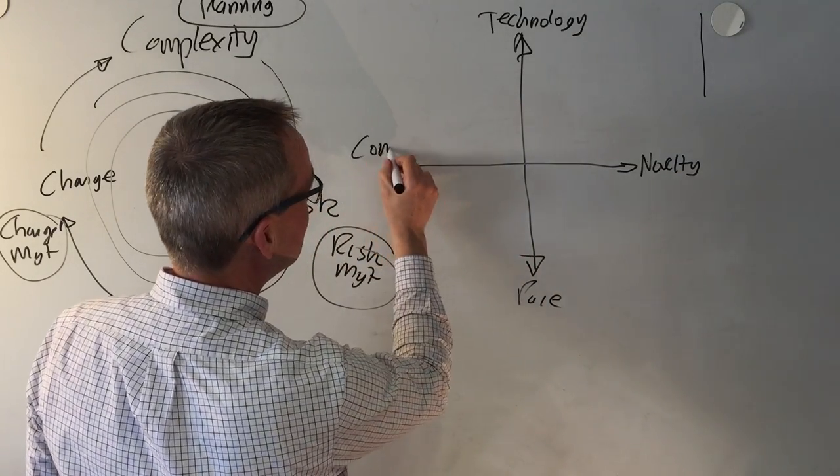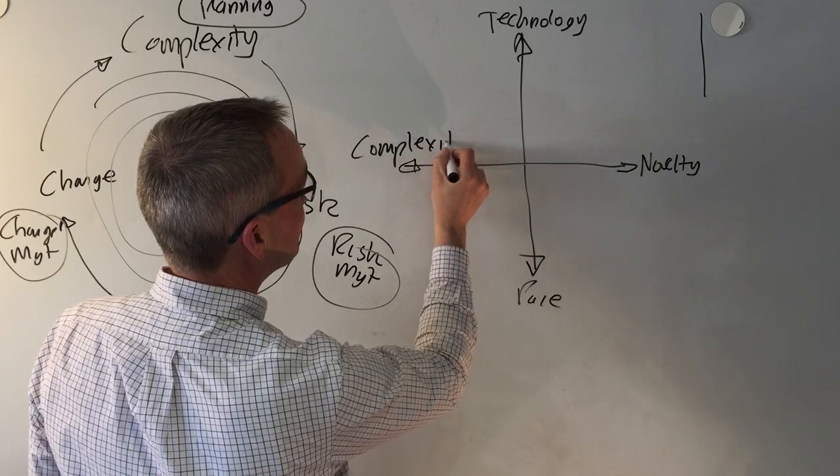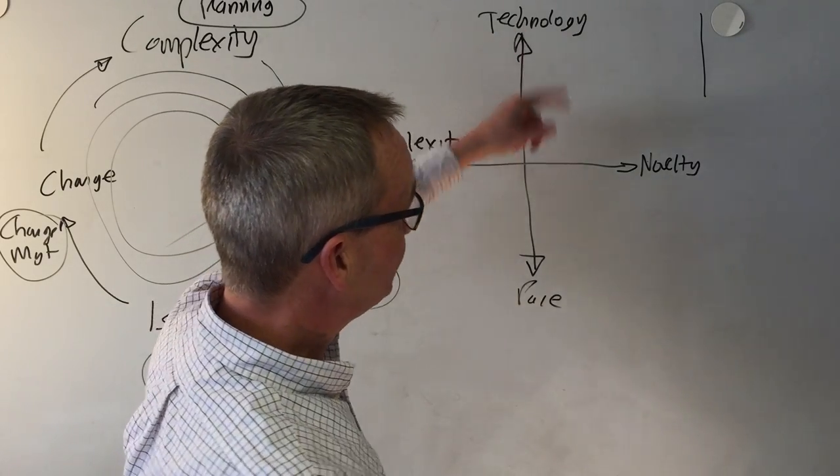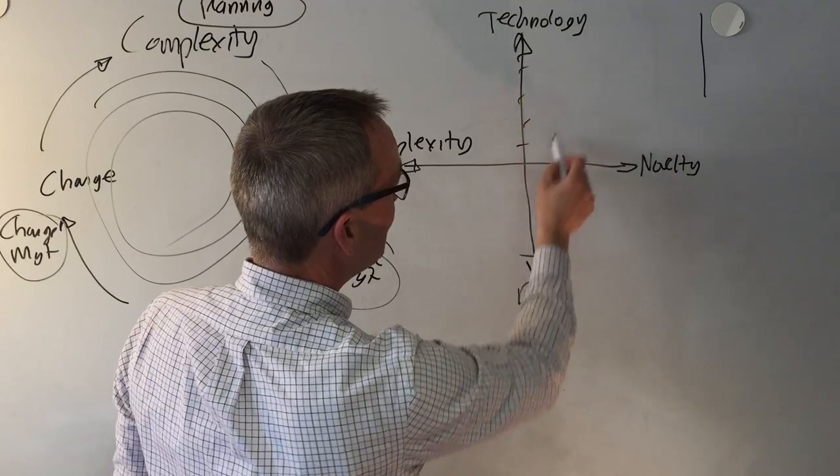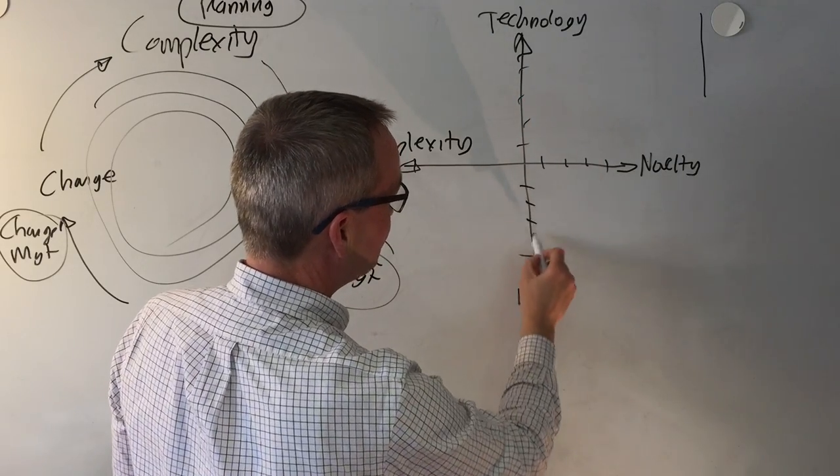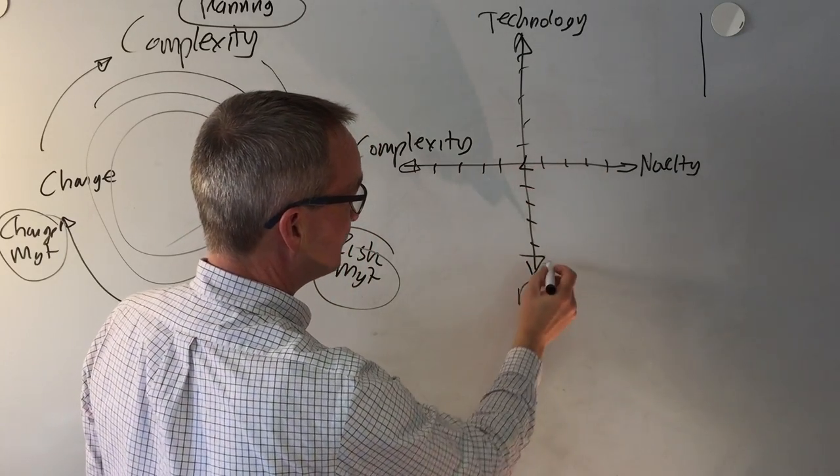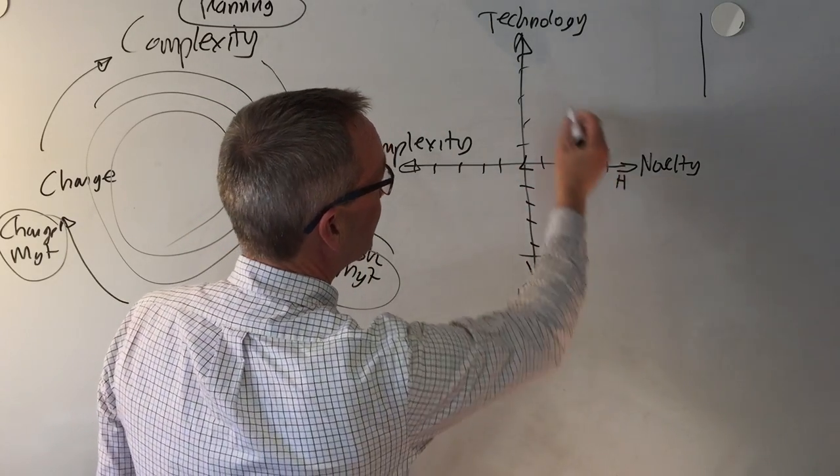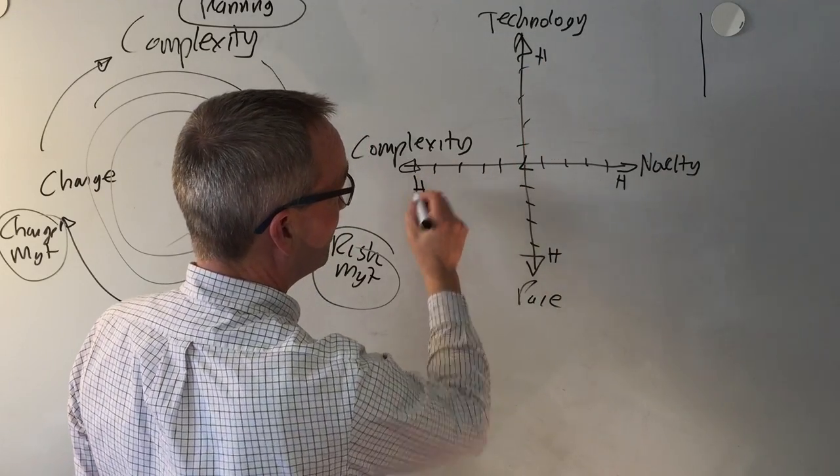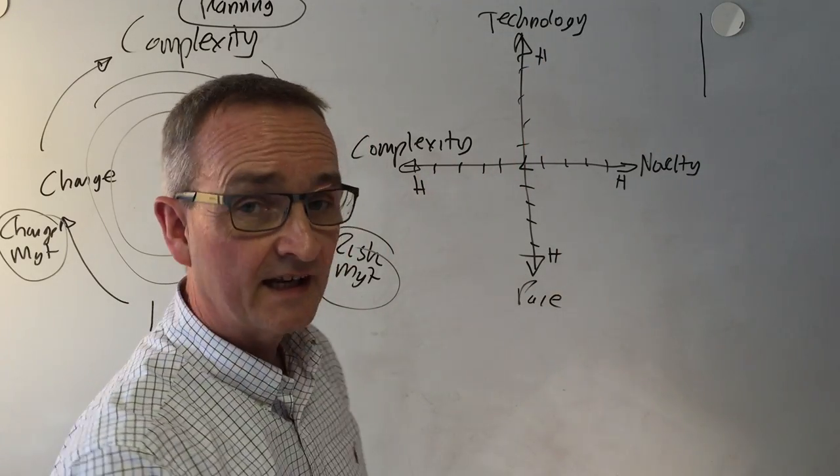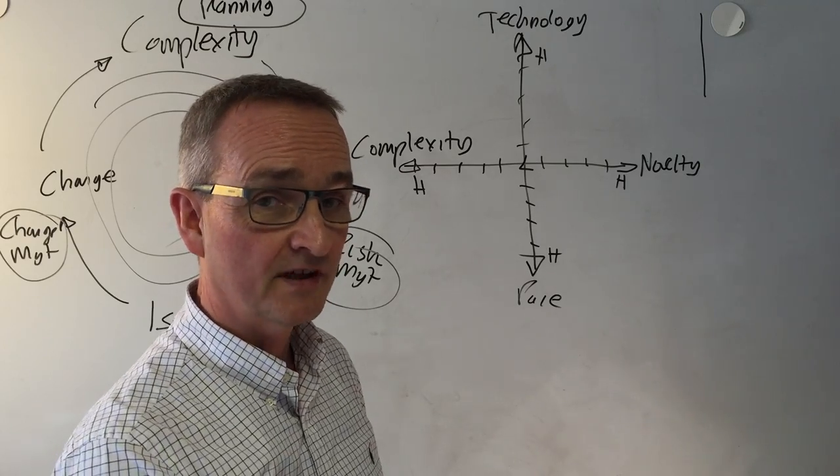What it does is it looks at four different axes and allows you to view projects in a very high level way. So the four axes are the level of technology, novelty, pace and complexity.